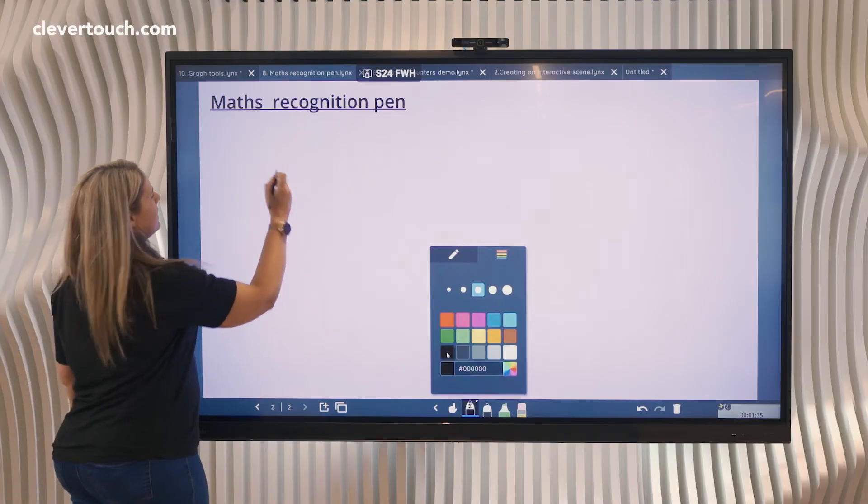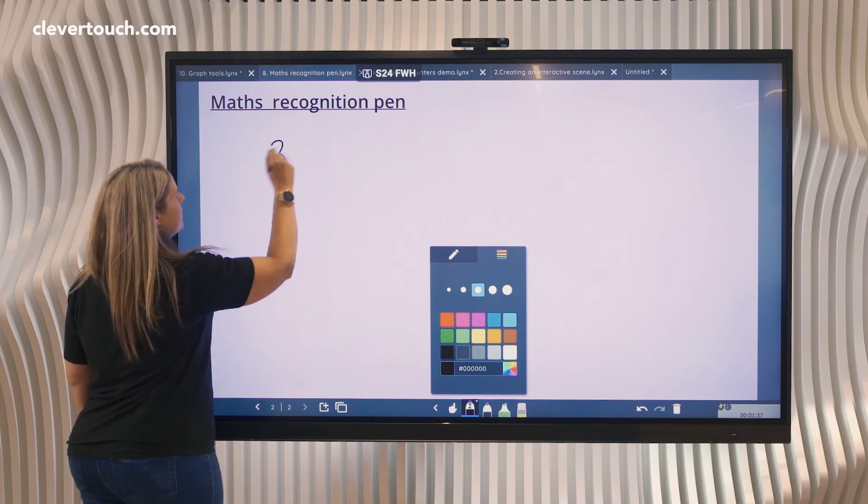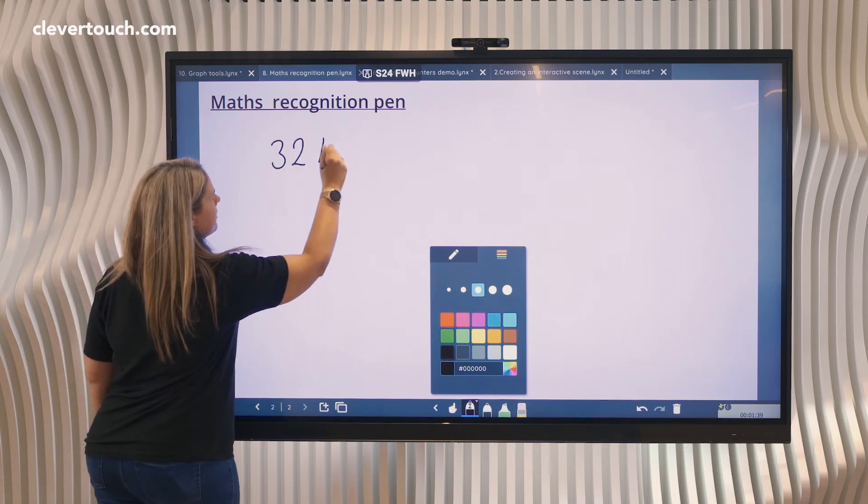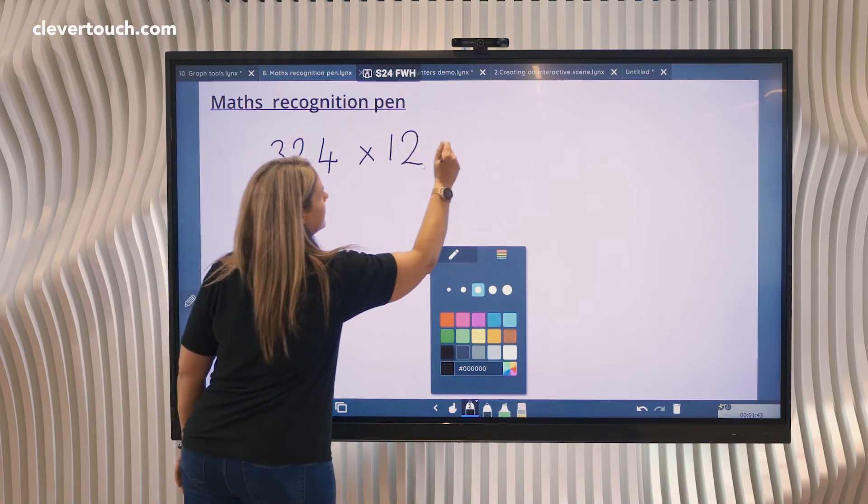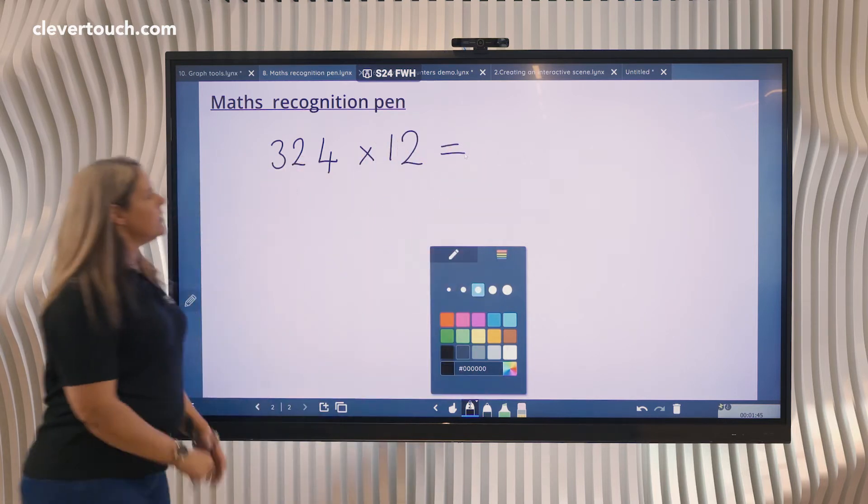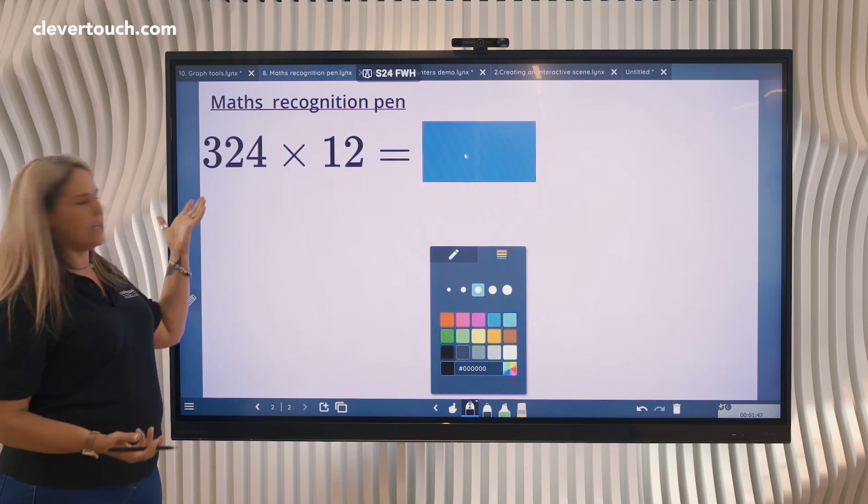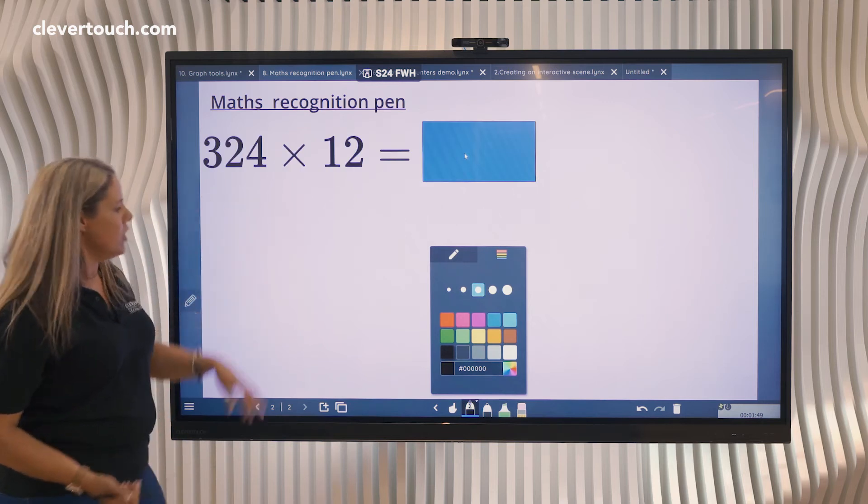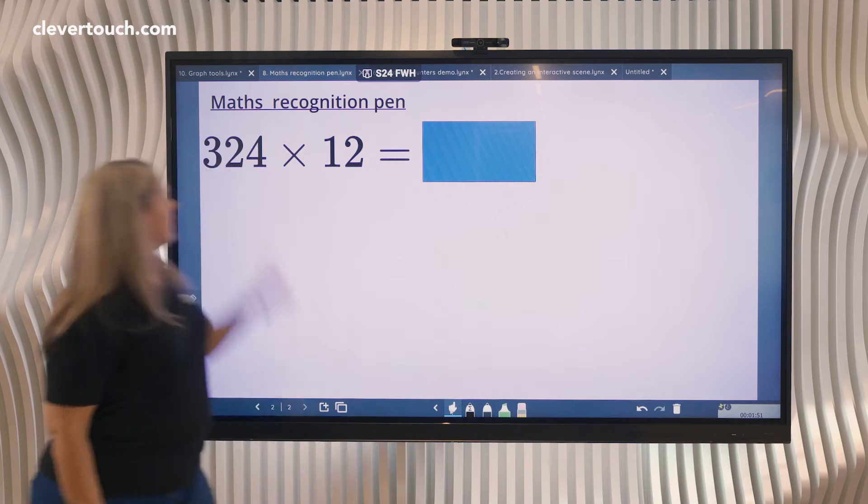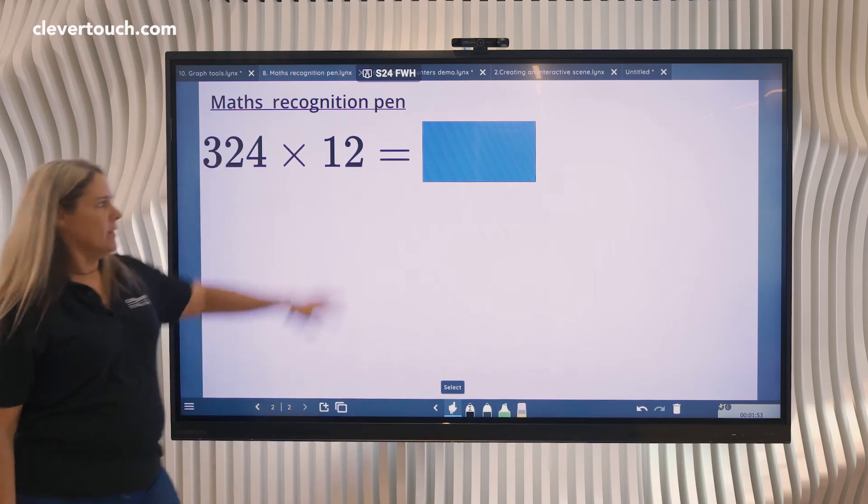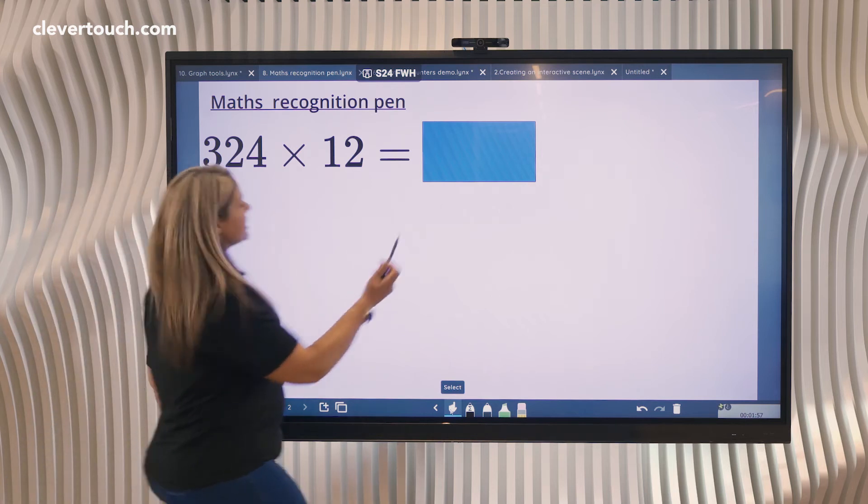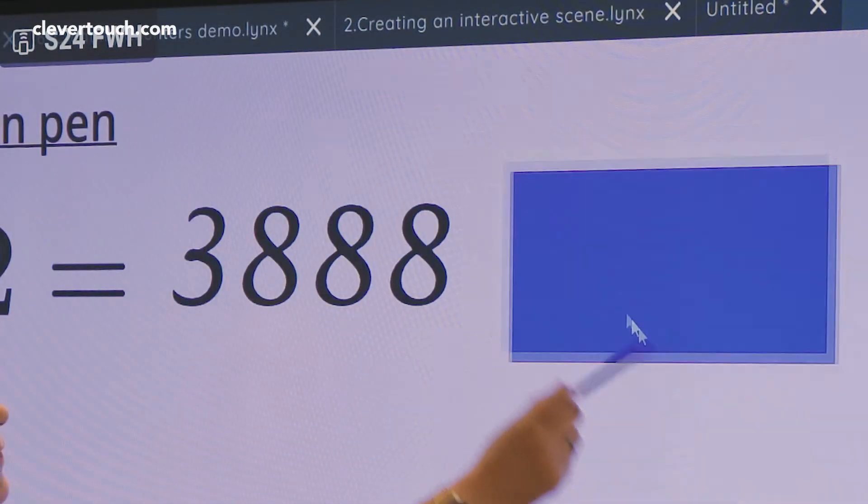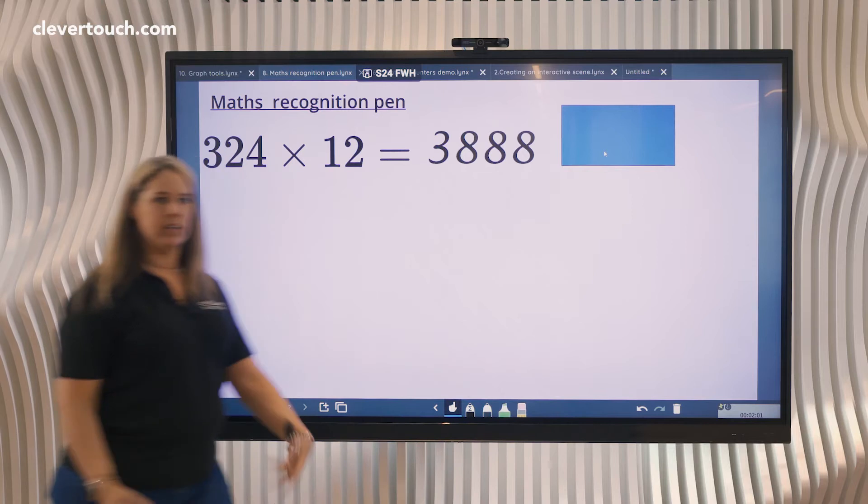If I just write a calculation, 324 multiplied by 12 equals, and I'll give it just a moment. As you can see, it automatically recognizes those digits I've written. It's also put a little blue box on, and what it actually does is when I remove the blue box, it reveals the answer.